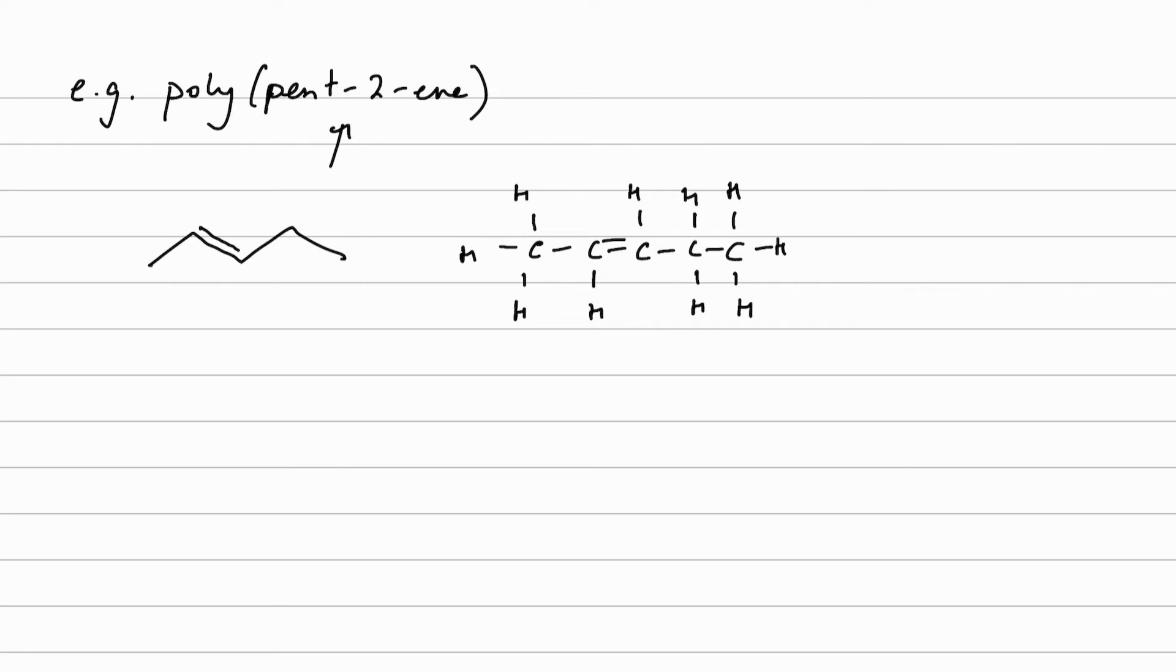So how do I turn that particular monomer into a polymer? Well, the first trick is to redraw it so it looks like ethene, because that makes life much more simple. In which case, ethene, carbon, double bond, carbon.